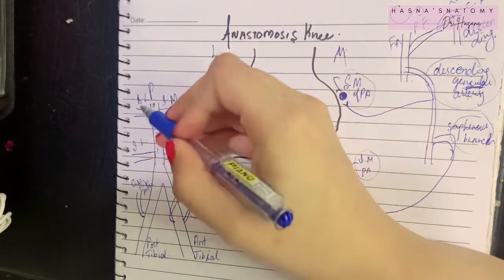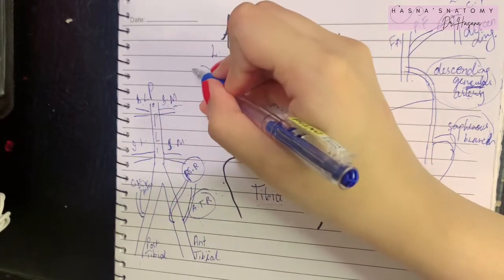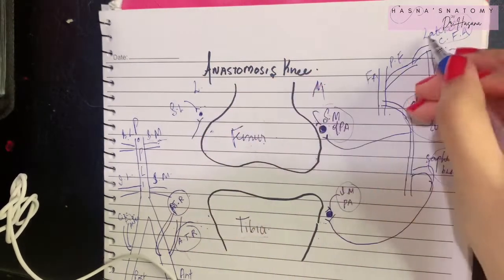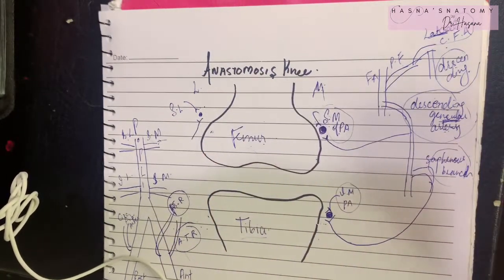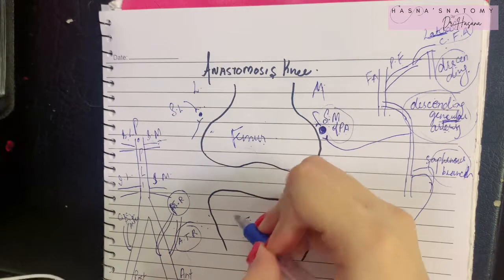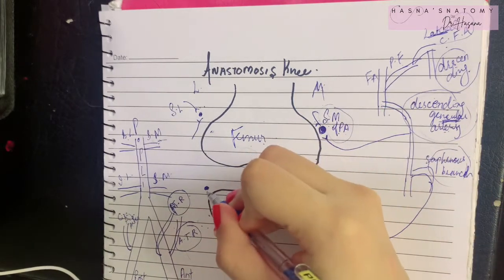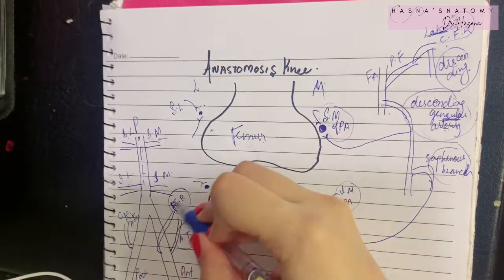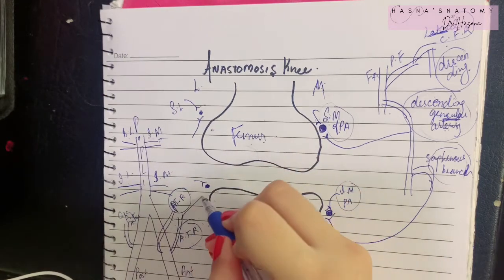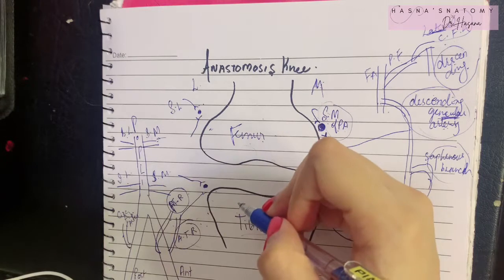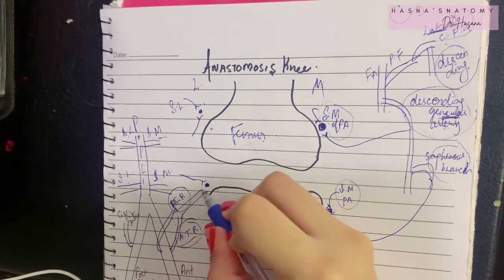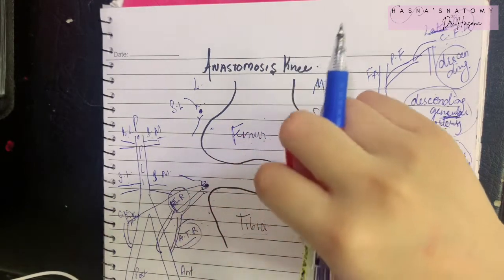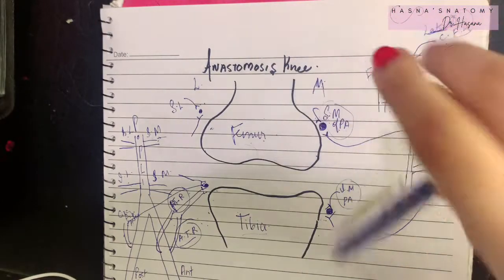On the lateral side, above the lateral condyle of the femur, the superior lateral genicular artery anastomoses with the descending branch of the lateral circumflex femoral artery. Below the lateral condyle of the tibia, the anastomosis takes place between the inferior lateral genicular branch of the popliteal artery and three vessels: the anterior tibial recurrent, the posterior tibial recurrent, and the circumflex fibular arteries.